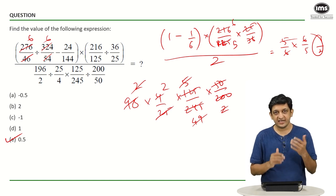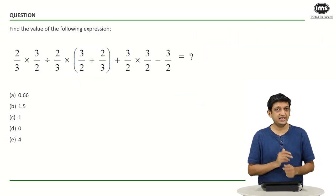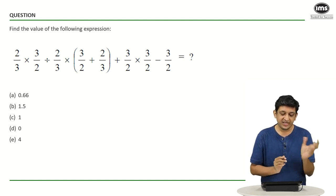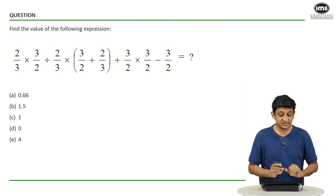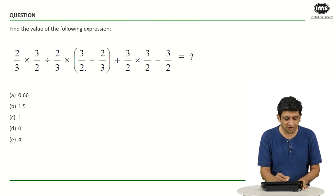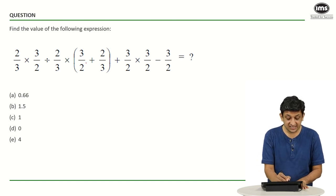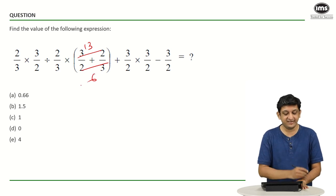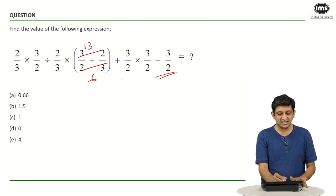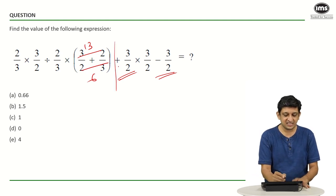Now I will show you the second question — you can again try it out on your own and then have a look at the solution. In this question we have to find the value of the expression given. We can apply the same principles: wherever there is multiplication or division we can flip the terms. The first thing we can do is solve the bracket using BODMAS. So 3/2 plus 2/3 will be — 3 threes are 9 plus 4 — that is 13 divided by 6. So the entire bracket is replaced by 13/6.